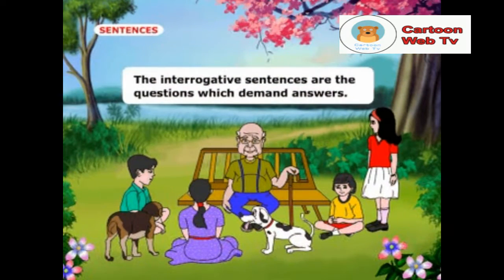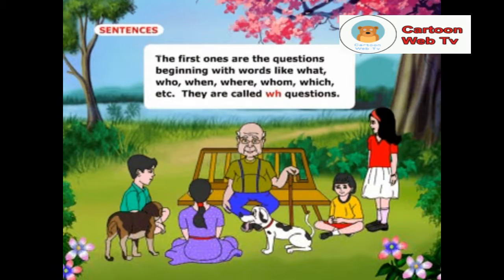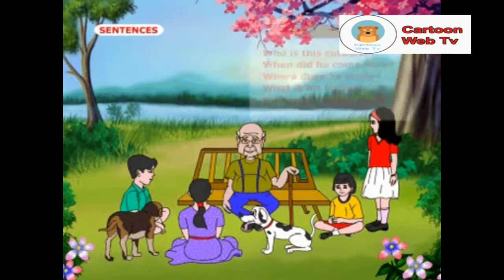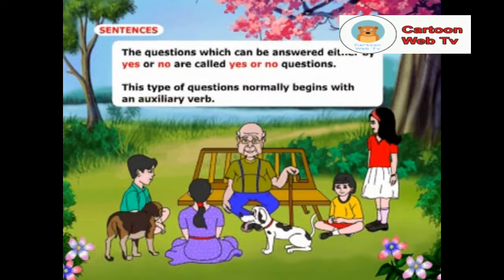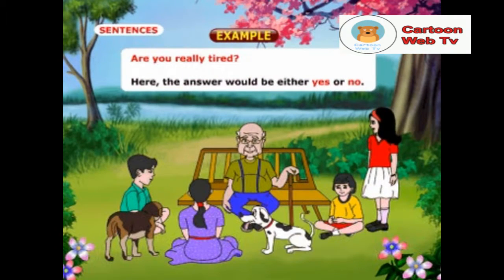The interrogative sentences are questions which demand answers. There are two types of interrogative sentences. The first ones are questions beginning with words like what, who, when, where, whom, which, etc. They are called WH questions. Examples: Who is this cute boy? When did he come here? Where does he study? What is his father? Which is his native place? The questions which can be answered either by yes or no are called yes or no questions. This type of question normally begins with an auxiliary verb. Example: Are you really tired? The answer would be either yes or no.